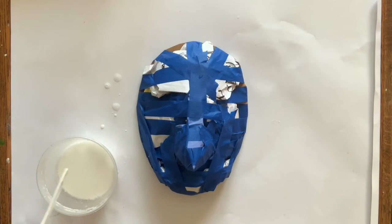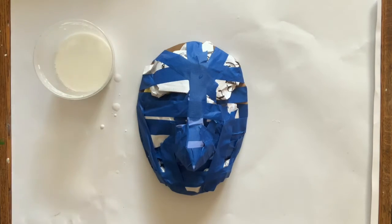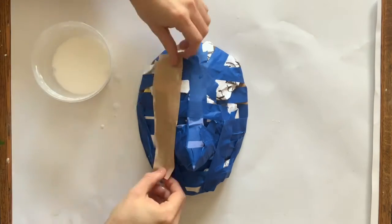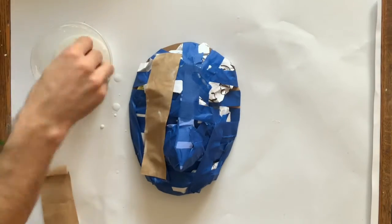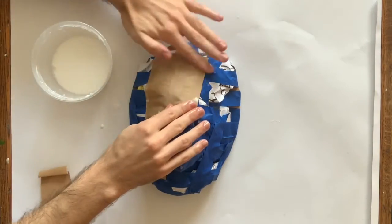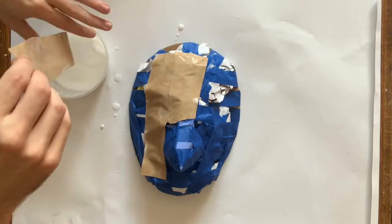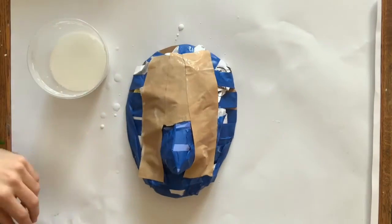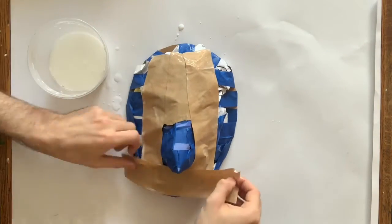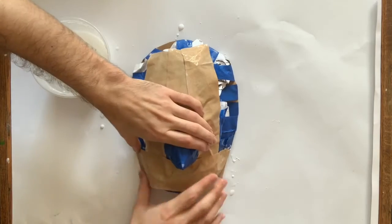Basically, you can take your white glue and just water it down enough that it's easily spreadable, that it's like a little bit thinner. The thinner that you make the glue, the longer it will take to dry, but it will still work even if it's pretty watery.